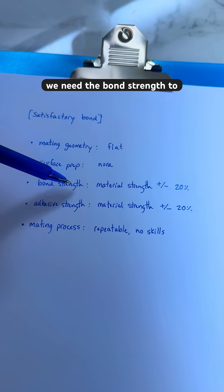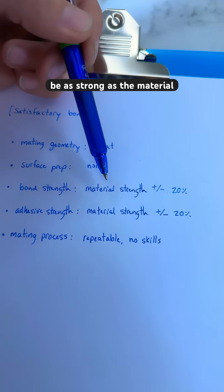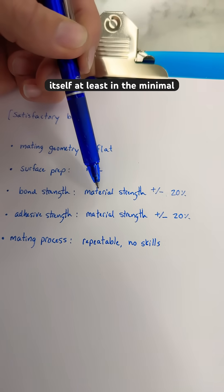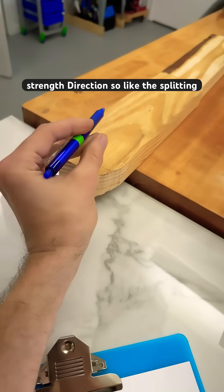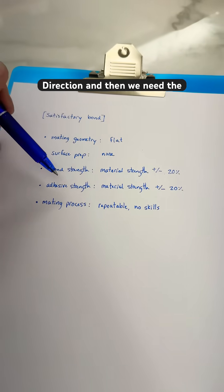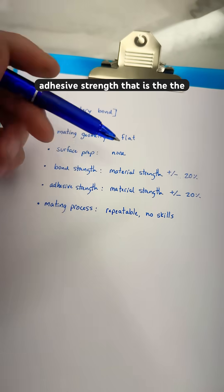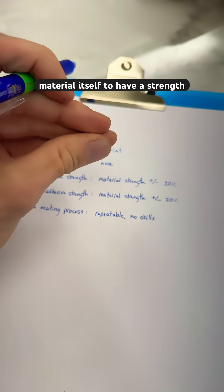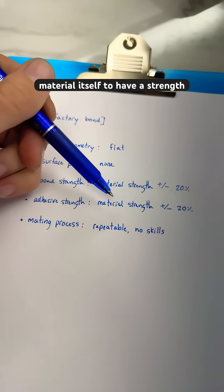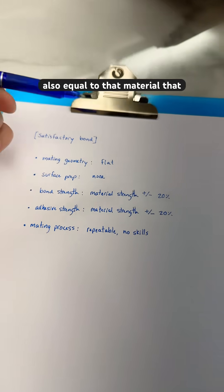We need the bond strength to be as strong as the material itself, at least in the minimal strength direction like the splitting direction. And then we need the adhesive strength, that is the material itself, to have a strength also equal to that material that we're bonding.